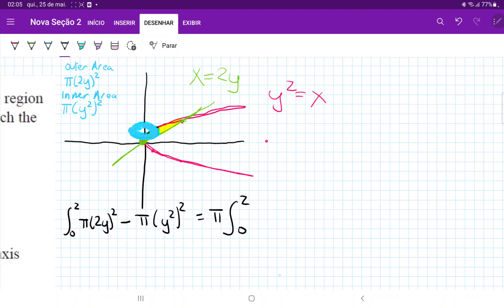And that is, let's see, that is 4y squared minus y to the power of 4. And all of this times dy, because we're expressing these curves as functions of y. So all we have to do now is integrate and then apply our boundaries.